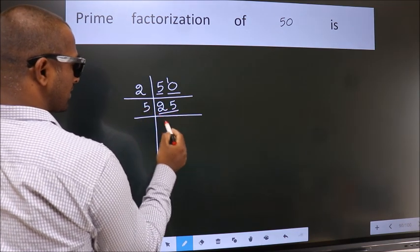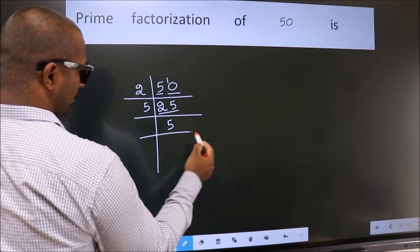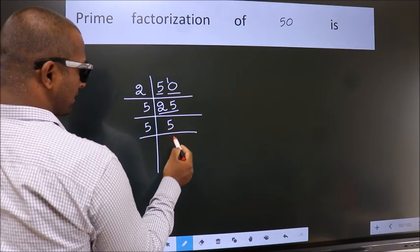25 is 5 times 5 is 25. 5 is a prime number, so 5 once 5.